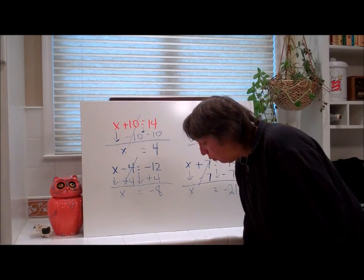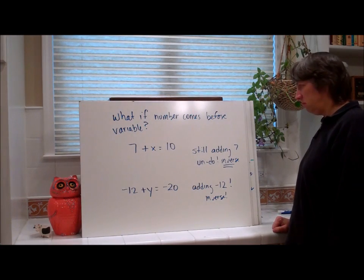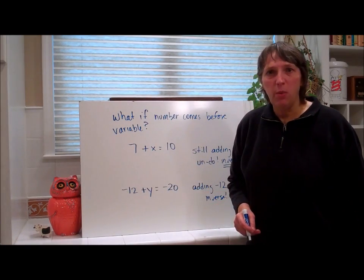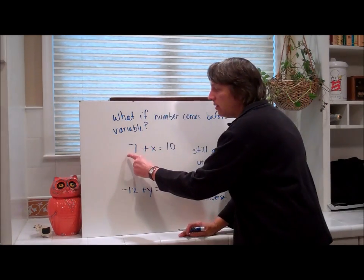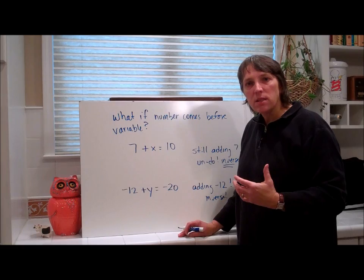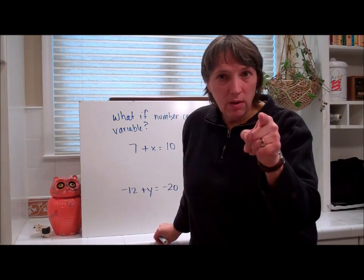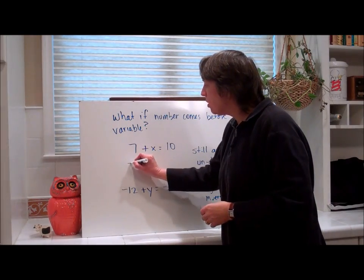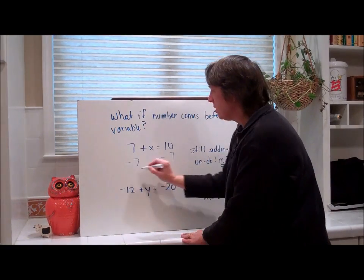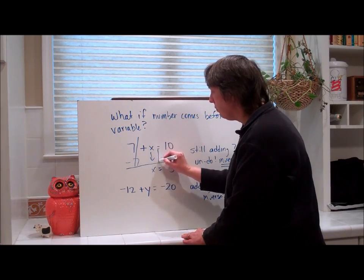Here we go. What if the number comes before the variable? It doesn't change anything. We still look at it and say, what's being done to the variable? Well, we're adding 7. This is a positive 7. How do you undo adding 7? The inverse. So, inverse of adding 7 is to subtract 7. So, when we do this, we bring down the x. 10 minus 7 equals 3. Bring that down.